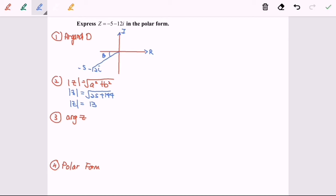The third step is to find the argument of Z. So tangent theta will be equal to y over x. Do remember to ignore the negative sign. So theta will be tangent inverse of 12 over 5. We will have 67.38 degrees as a basic angle.